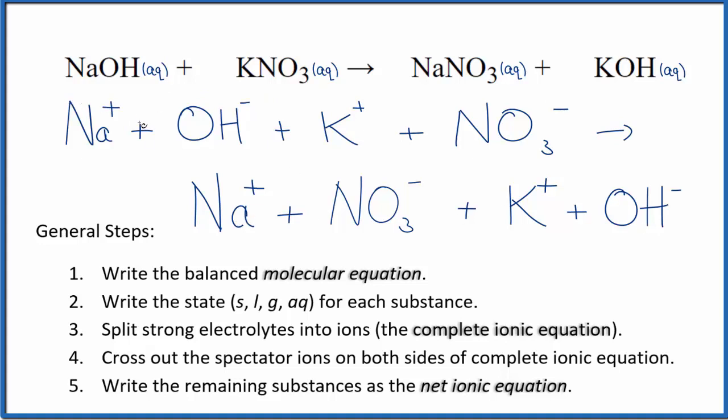We'll cross out the spectator ions. They're on both sides: sodium ion and sodium ion, hydroxide and hydroxide. In the products and reactants we have potassium. In the reactants we have the nitrate ion and in the products as well.